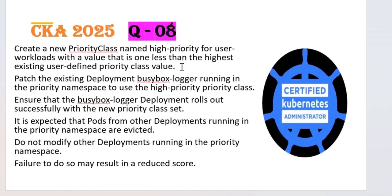Next, we need to patch the deployment of the BusyBox logger running in the priority namespace to use the high priority class. Once we create the priority class, we need to patch the existing deployment running in the priority namespace with 'high-priority' set as the priority class. We also need to ensure the BusyBox logger deployment rolls out successfully with the new priority class set. The question states it's expected that pods from other deployments running in the priority namespace are evicted.